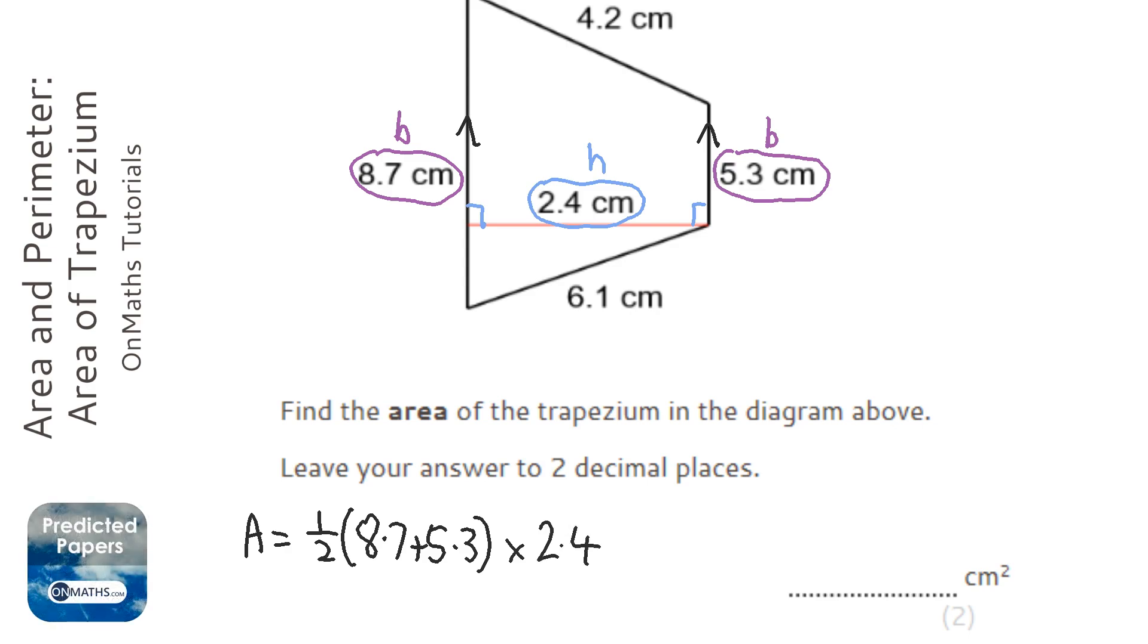So I'm going to get my calculator out. I'm going to do 0.5 brackets, 8.7 plus 5.3, close brackets, times 2.4.